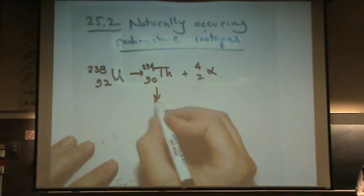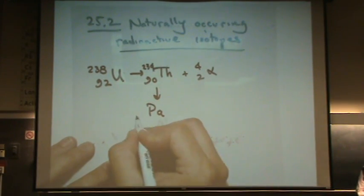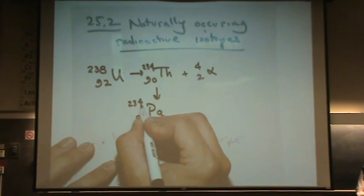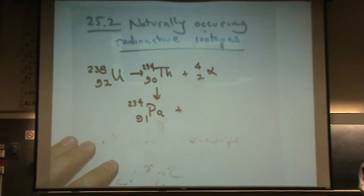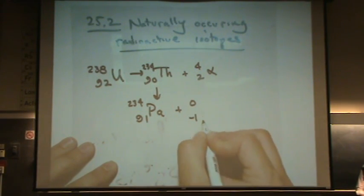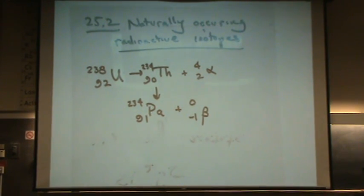This can react again, going to 91 and 234. Now if you balance this, you'll need a minus one here and a zero here. That's a beta particle or an electron.